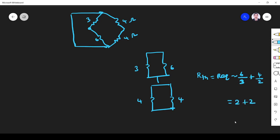R Thevenin is 4 ohm. If you have any doubt, please find the equivalent resistance for this. R equivalent is 3 into 6 divided by 3 plus 6, 18 by 9, 2 ohm. Here R equivalent is 4 into 4 divided by 4 plus 4, it is also 2 ohm.